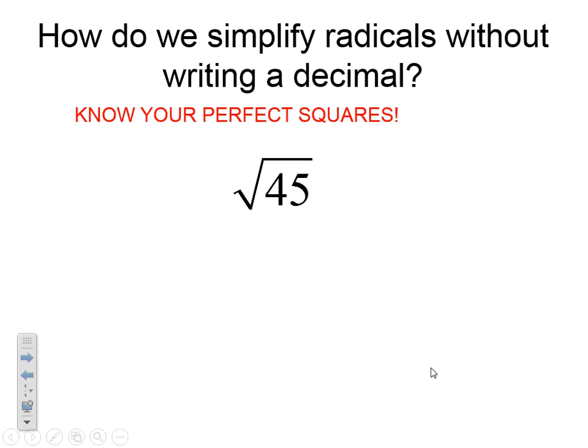Next, how do we simplify a radical without writing a decimal? You need to write this down and show all your steps so that we can have examples in your notes. So the first thing you need to know is you need to know those perfect squares. So what I want to do is I want to take the square root of 45. And basically what I want to do is I want to find two numbers that multiply to make 45, one of them being a perfect square.